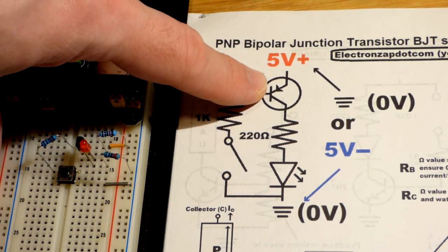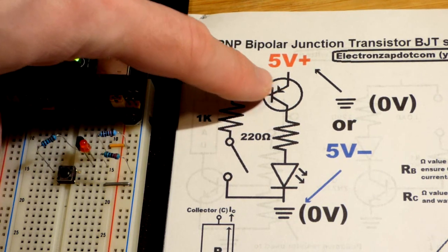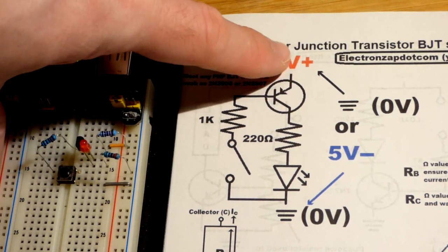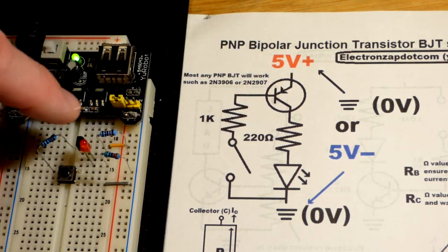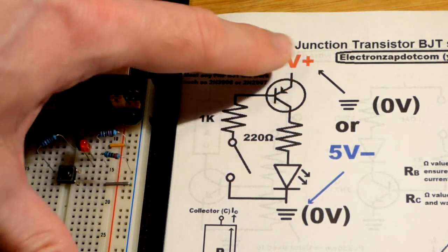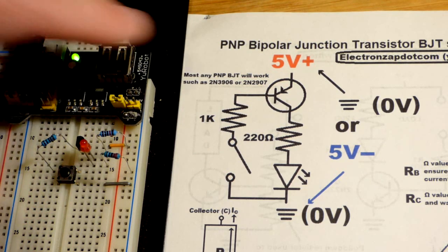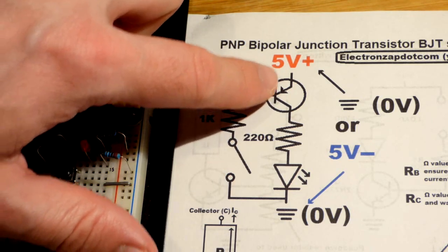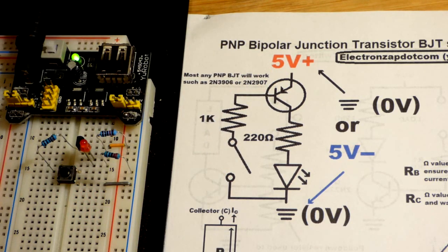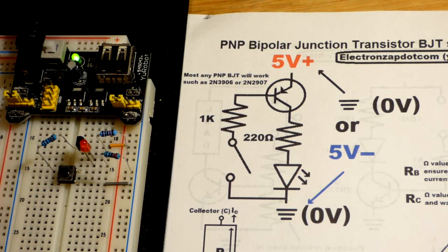The schematic symbol for the PNP is basically the same, except for the arrow that indicates the emitter terminal is pointing in for the PNP transistor, whereas it is pointing out for the NPN transistor. It's important that you look at the transistor symbol and which direction the arrow is going. We have the basic switch circuit.